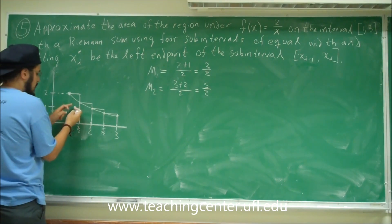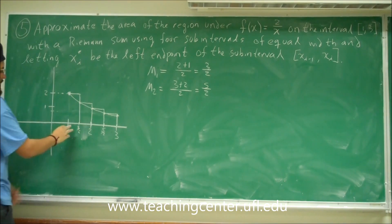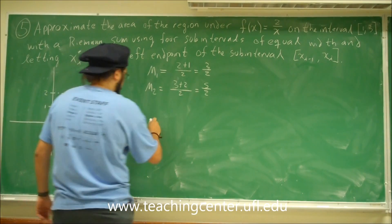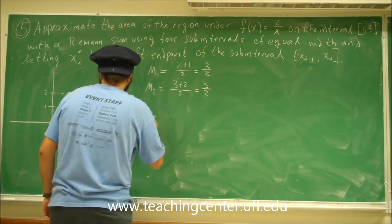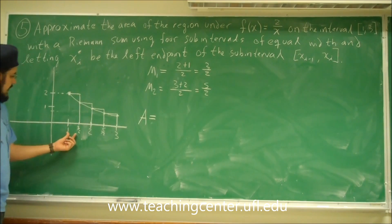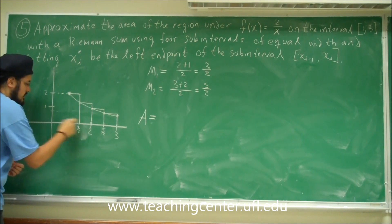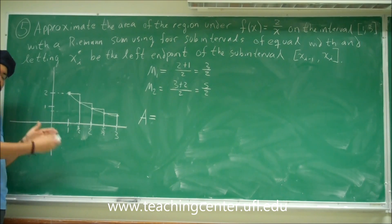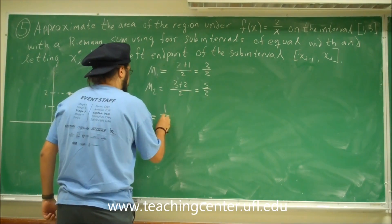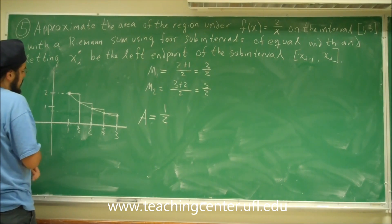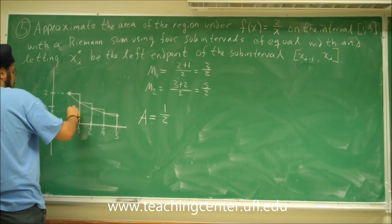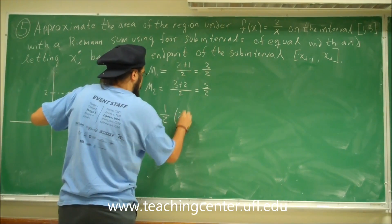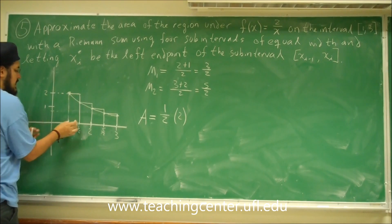To find the area of these four rectangles, we multiply length times width. The width of each piece is 1/2 since they're all equal width. So we have 1/2 times the height. The first rectangle's height comes from f(1) = 2/1 = 2. So the area of the first rectangle is 1/2 times 2.